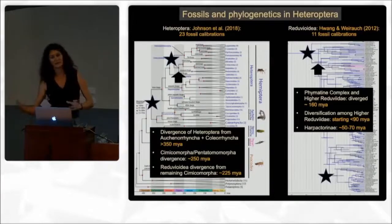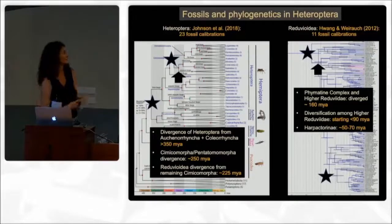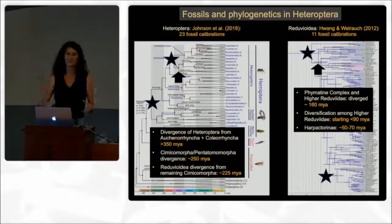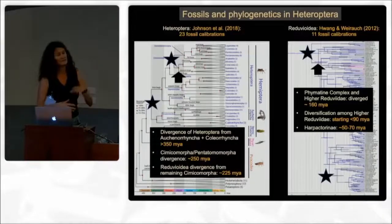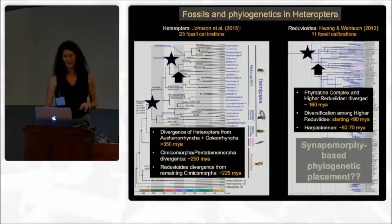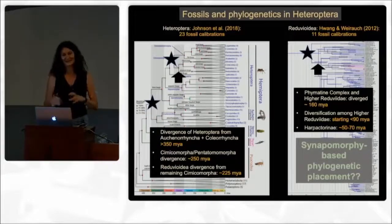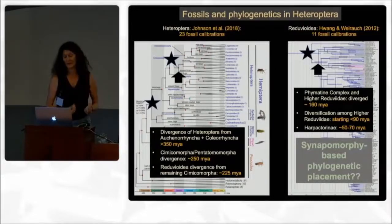The diversification among higher Reduvioids, which contains the great majority of species and assassin bugs, started a little bit after Cretaceous amber. Halpachmine, depending on different analyses, we think diverged between 50 and 70 million years ago from its sister group. Although most studies claim they placed their fossils based on PARMS criteria — using synapomorphy-based criteria to figure out which node a fossil should calibrate — the fossils are not actually included in these analyses, so we do not really know for certain where they are placed in these phylogenies.